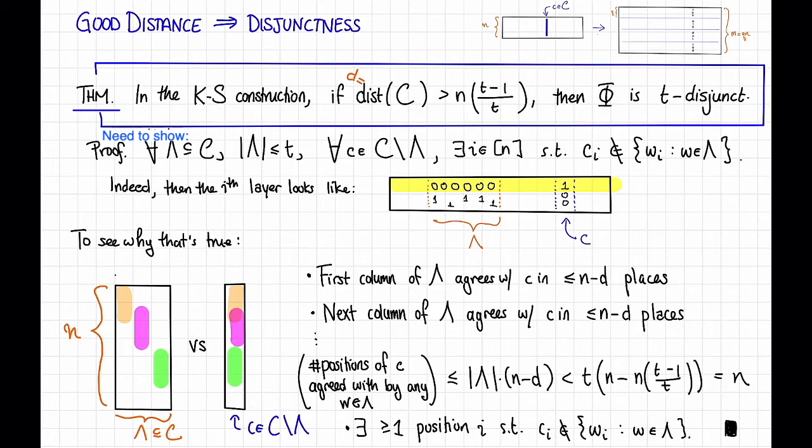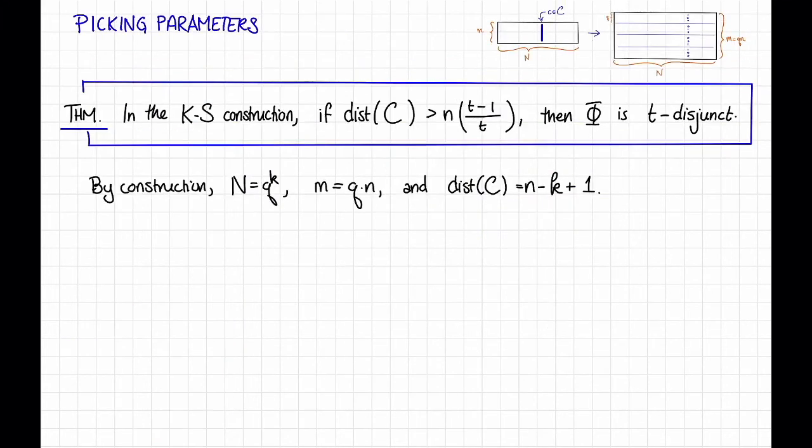Thus, in order to come up with a good group testing matrix, all we need is a code with good distance. Fortunately, we do know a code with good distance. Let's use a Reed-Solomon code. Okay, so let's pick some parameters to instantiate this theorem and make a good group testing matrix. So just as a reminder, by construction, we have capital N equal to q to the k, m the number of tests equal to q times n, and let's choose a Reed-Solomon code so that the distance of C is equal to n minus k plus 1. In fact, let's choose the Reed-Solomon code that has all q of the evaluation points. So that means that n is equal to q.